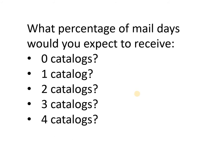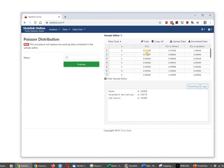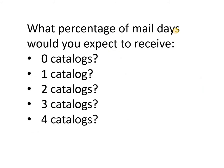Let's do some probabilities. What percentage of the mail days would you expect to receive zero, one, two, three, and four catalogs? This is the point where we need StatDisk. We'll set the average to 0.31 and it spits the probabilities out for us. So P(0) = 0.733 — about 73% of the mail days you'd expect there to be no Victoria's Secret catalog in the mail.